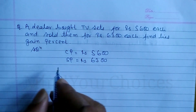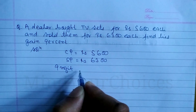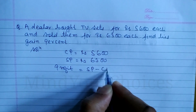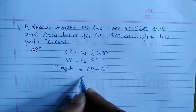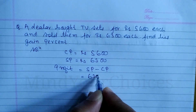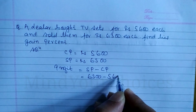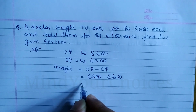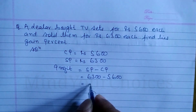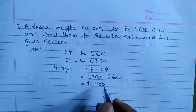SP is greater than CP, so there is profit. Profit is equal to SP minus CP, that is 6,300 minus 5,600. Calculate: this is Rs. 700. So profit is equal to 700.